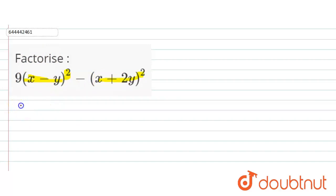Now let's come to the solution. The given expression is 9(x - y)² - (x + 2y)². Here we can write it as, we know that 9 is the square of 3.